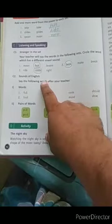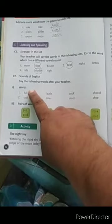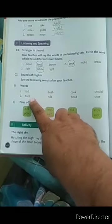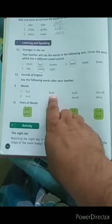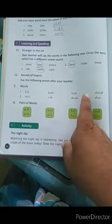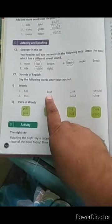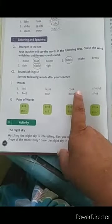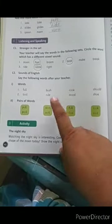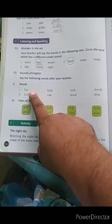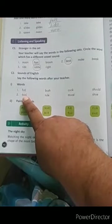Say the following words after your teacher. First, I will write this word and then you will write it. Word is pull, bush, cook, should. Pull, bush, cook, should. Look, this is U, which is a short sound. And this is a long sound.